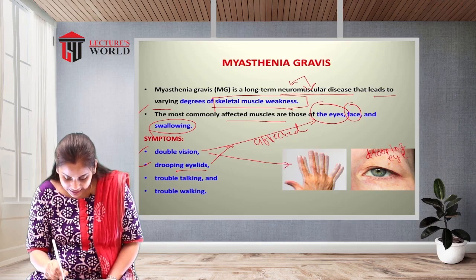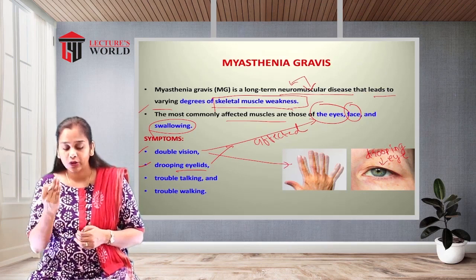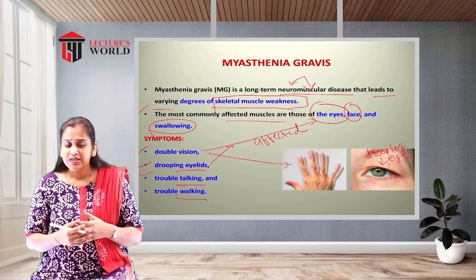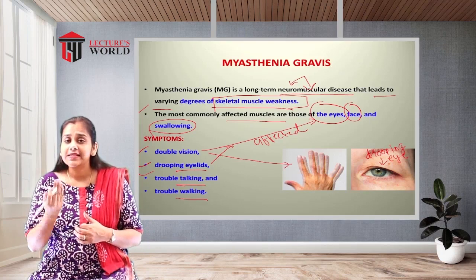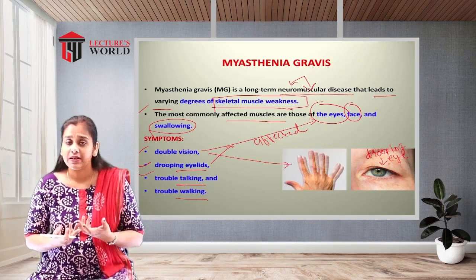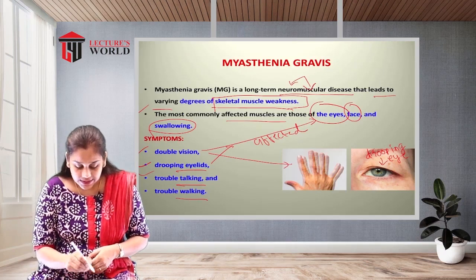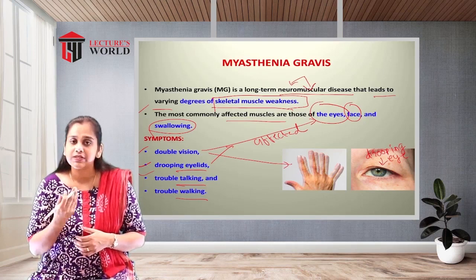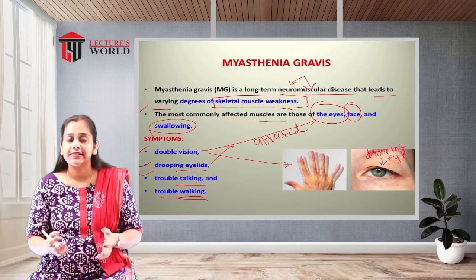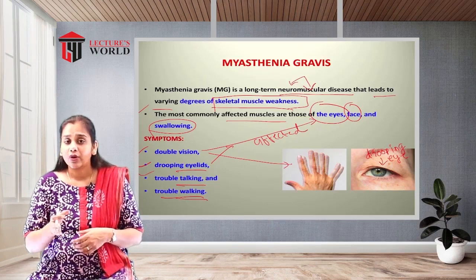The drooping eye occurs because the eye muscles become weakened. There is also trouble in talking because the muscles related to swallowing and the face become weakened, so the person cannot speak properly. Trouble in walking occurs due to overall muscle weakness in the body, affecting the person's gait.